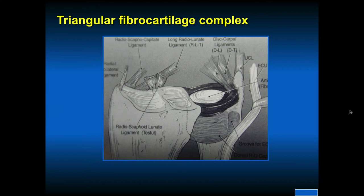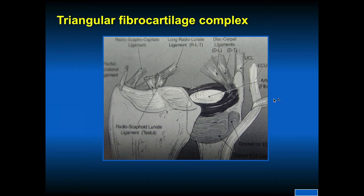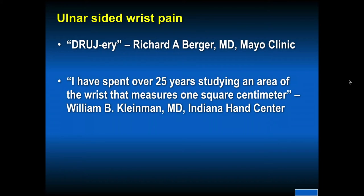This is what the TFCC complex looks like by drawing. There is a little annular disc — a very small joint. Ligaments aren't that stable or big, so you can go in and debride this fibrocartilage. Some people repair it. Ulnar-sided wrist pain has also been classified as drudgery by Richard Berger of the Mayo Clinic.